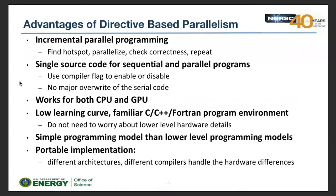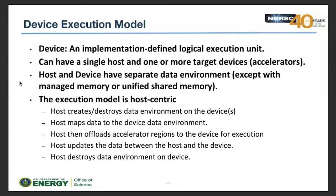What are the advantages of directive-based parallelism? First, you can do incremental programming: find your hotspots, add some directives, check progress and correctness, then repeat. It allows you to maintain a single source for sequential and parallel code — use a compiler flag to enable or disable it with no major rewrite. It works for both CPU and GPU, has a very low learning curve since you stay in your familiar language environment (C, C++, Fortran), and you don't have to worry about lower-level hardware details. The compilers hide that for you, and it helps you port to different architectures.